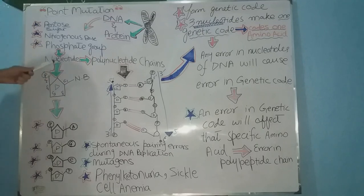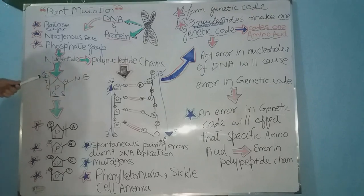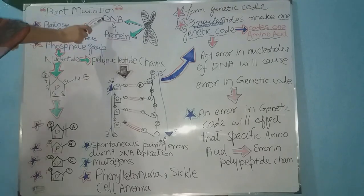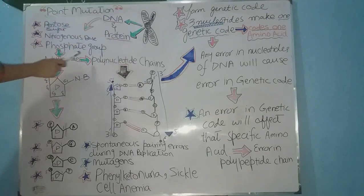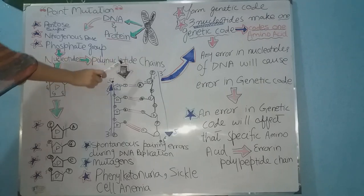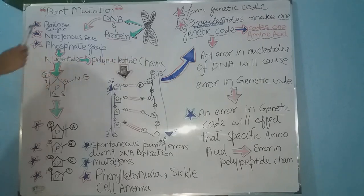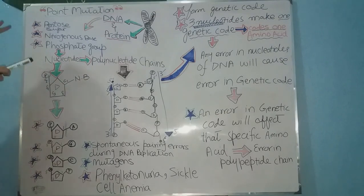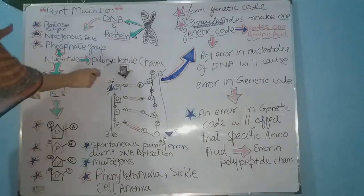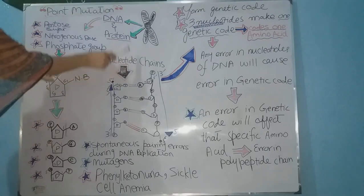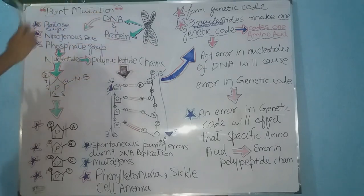The structure of a nucleotide consists of a nitrogenous base, a phosphate group, and a deoxyribose sugar. In DNA, many nucleotides are present — these polynucleotides form two polynucleotide chains, and these two polynucleotide chains actually form the structure of DNA.